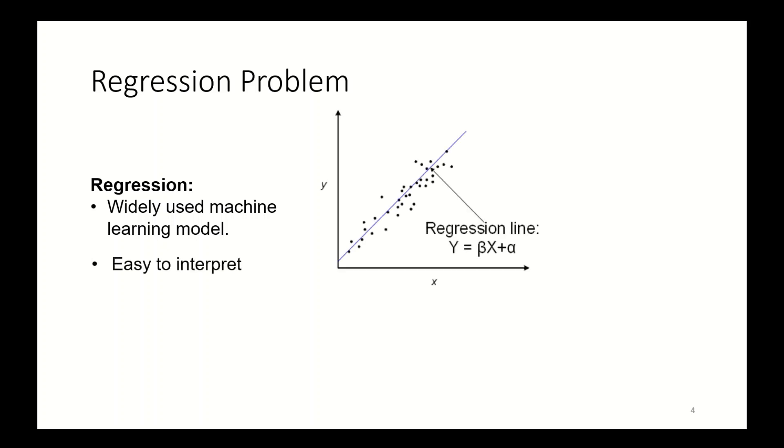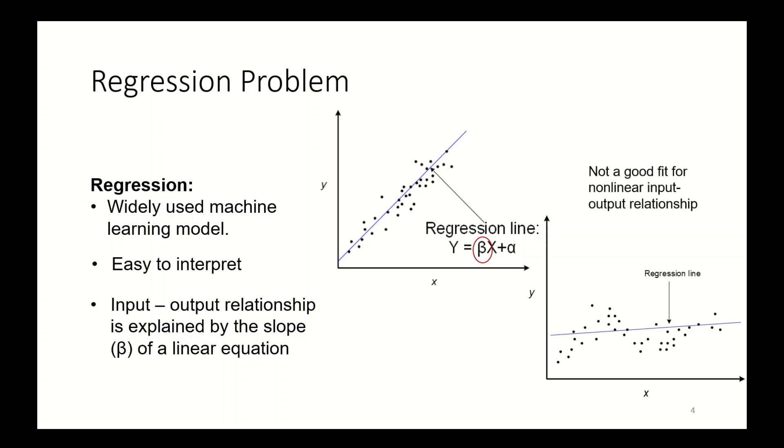Regression problem: linear regression or multi-linear regressions are widely used machine learning models. It is easy to interpret since the model is basically a simple linear equation, where the model's input-output relationship is explained by the slope beta of the linear equation. However, it is not a good fit for non-linear input-output relationships.